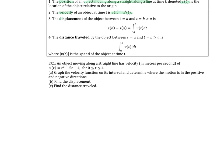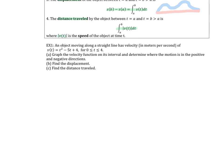We're going to look at displacement and distance traveled. Displacement is different than distance traveled — displacement is how far you are from your starting position, while distance traveled is whatever your path is. Displacement is start to end. When we have the velocity, we can simply integrate to find displacement. For distance traveled, we have to take the absolute value of velocity, which is just the speed.